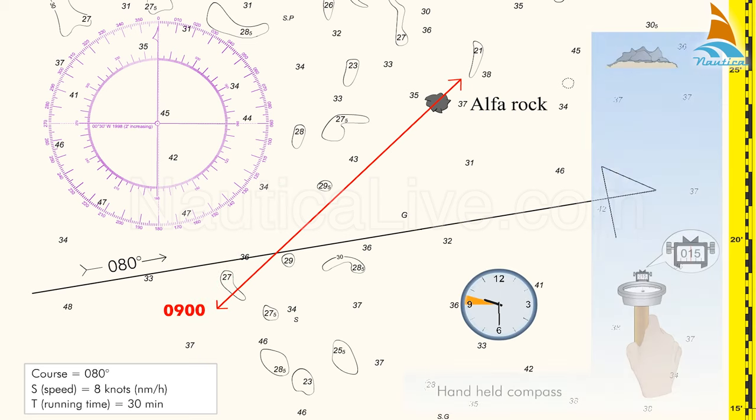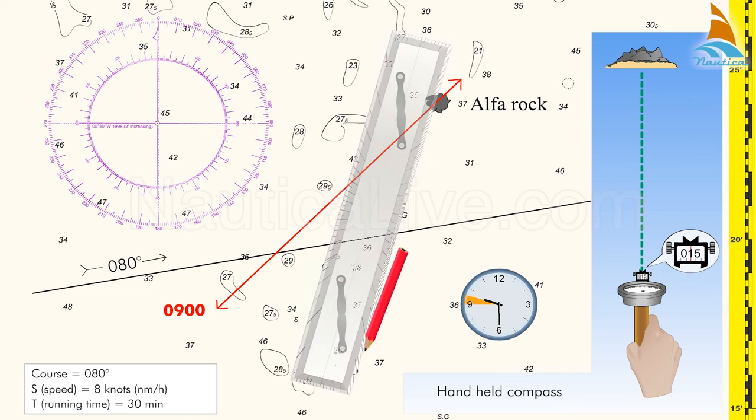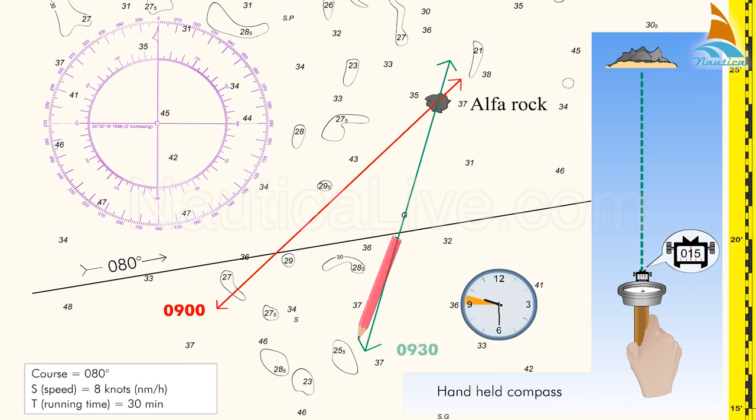After 30 minutes we take a new bearing on the same rock that reads 015 degrees. Now convert the compass bearings to true bearings and plot it on the chart along with the new time, 0930.